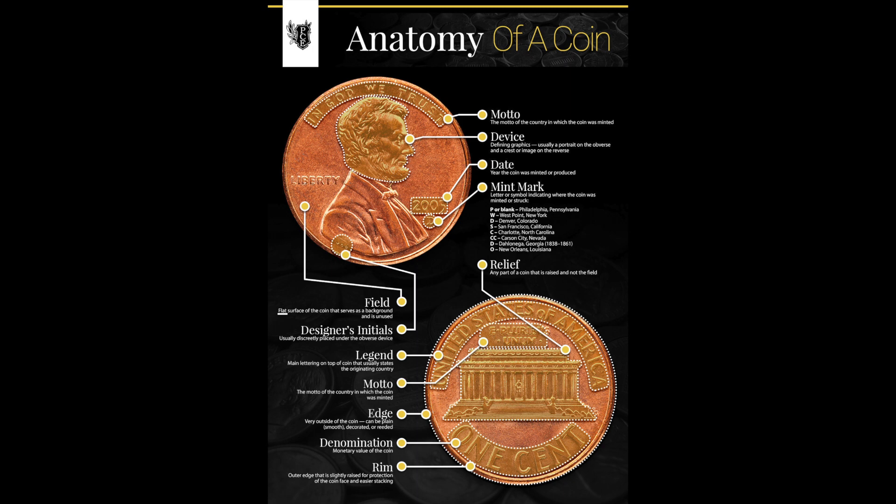Relief is any part of the coin that's raised and not in the field. The field is the flat surface of a coin that serves as a background and is completely unused. Designer's initials — as seen on this Lincoln penny, the VDB — are usually discreetly placed somewhere on the coin. The legend on the reverse is the main lettering on top of the coin that usually states the originating country. The motto of the country — so 'E Pluribus Unum' on United States coinage.